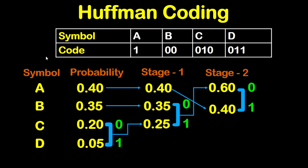To get the code for each symbol A, B, C, D, we are going to trace the path for each symbol and read binary numbers from right to left. For A, we trace the path and as you can see we are reaching 1. So the code for A is 1.